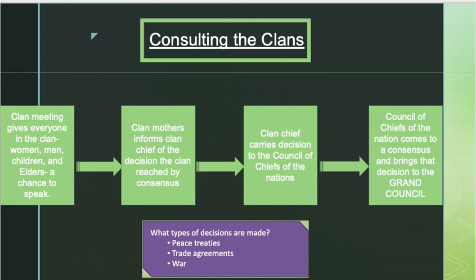The clan meeting gives everyone — women, men, children, and elders — a chance to speak. They advise the clan mothers, who then inform the clan chief of the decision reached by consensus. That consensus must happen at every single level. The clan chief takes it to the council of chiefs — the Grand Council — which also agrees by consensus. Topics they discuss include peace treaties, trade agreements, war, and even things like moving a village.